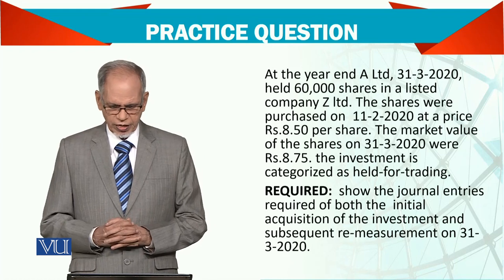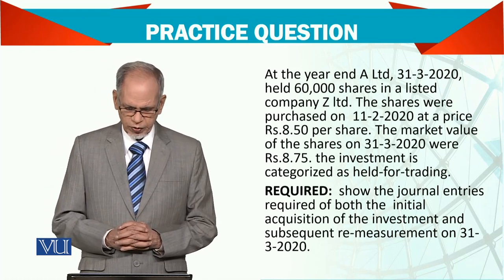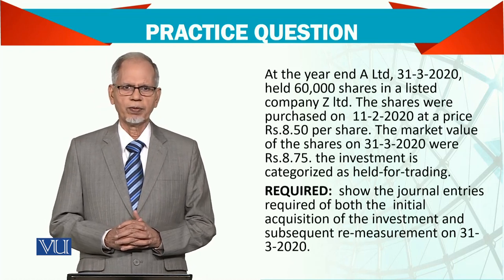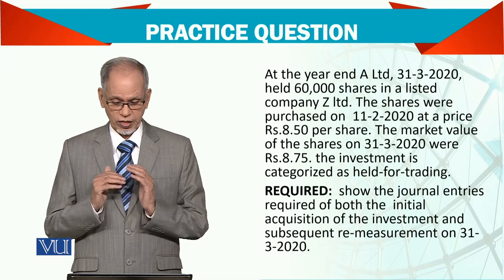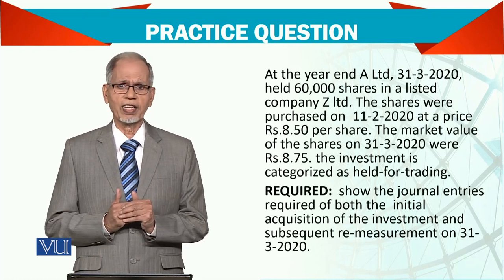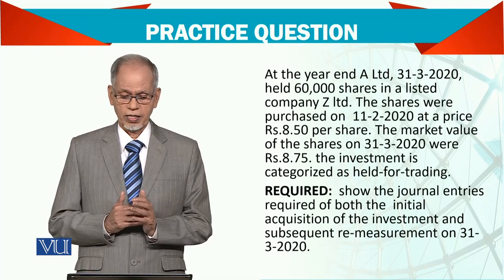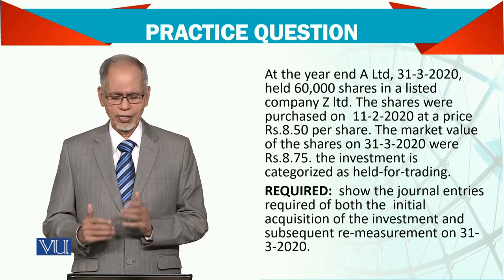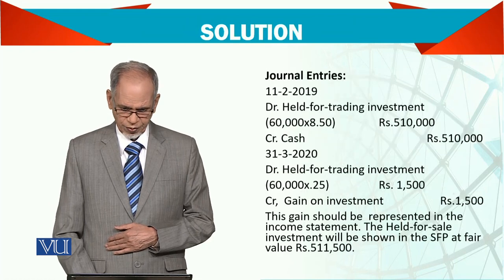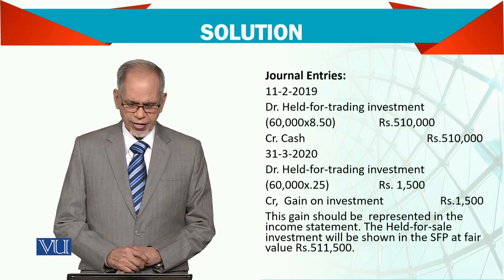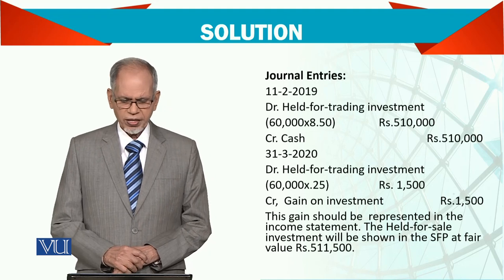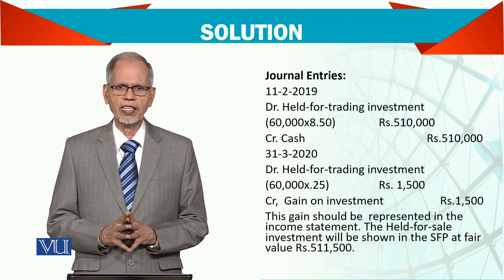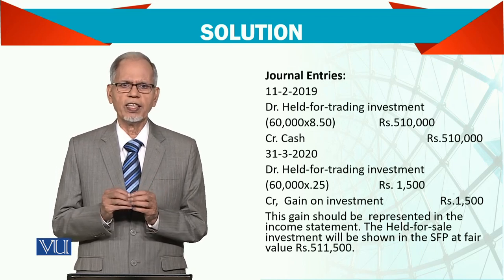Now show the entries required — both the initial recognition of the investments and subsequent re-measurement on 31st March 2020. That is, when you initially purchased, how much and how to record it; and at year end, since you haven't sold the shares, how do you record them? When purchased, the entry will be: held for trading investment. Clearly indicate that this investment in shares is held for trading purpose.